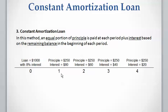To summarize, the borrower received a loan of $1,000 at 8% and has to pay a constant principal of $250 per year, plus interest calculated based on the remaining balance. As you can see, the interest is $80, $60, $40, and $20 from year one to year four, while the principal remains constant at $250 per year.